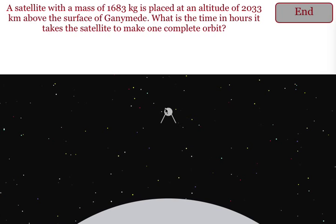In this problem, we're trying to determine the time it takes our satellite to make one complete orbit of our planet or moon. In this case, we have a satellite going around one of Jupiter's moons, and we're trying to figure out how many hours it takes to make one complete revolution.